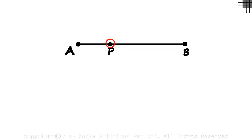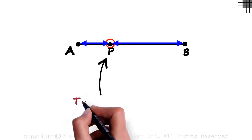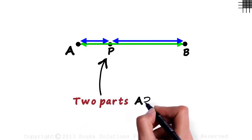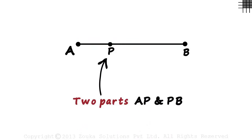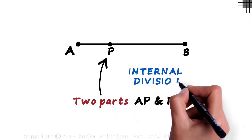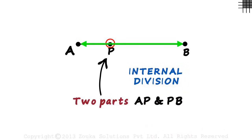A point will always divide a segment into two parts. In this case, the point P divides the segment AB into two parts AP and PB. This is called the internal division of a line segment. The point P divides the segment AB internally into two parts.